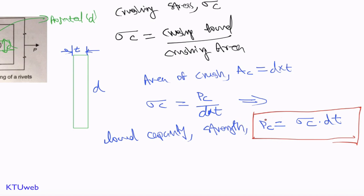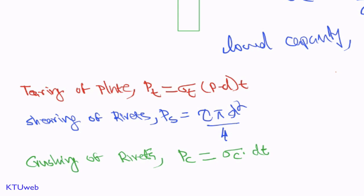When designing a rivet joint such that crushing does not reach pc, the rivet can easily sustain the load. To consolidate: the tearing capacity is pt = σt × (p − d) × t; the shear capacity is ps = τs × πd²/4; and the crushing capacity is pc = σc × d × t. These are the three governing equations for the three failure modes of a riveted joint.